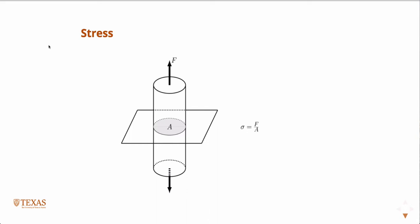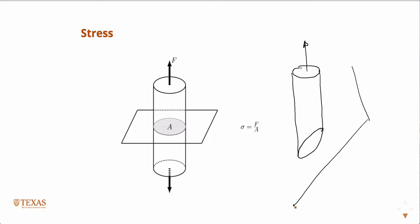Let's take our same tension bar and apply the same force to it, but this time I'm going to take a different plane to slice through. We'll call this area A prime. Then we could define a stress sigma prime, which is the same force divided by A prime.